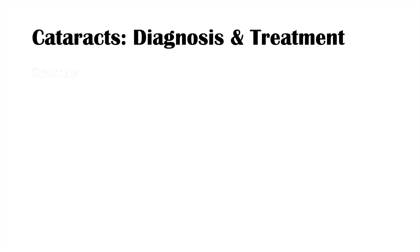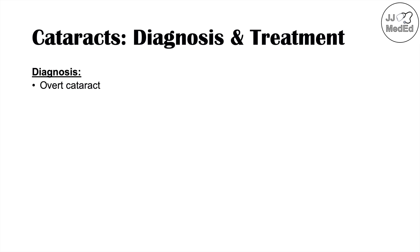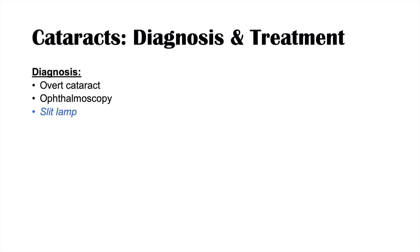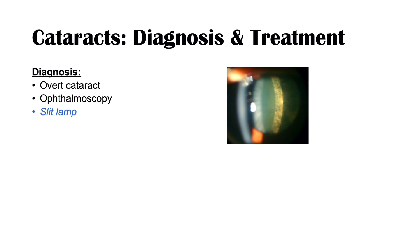Diagnosis of cataracts can involve overt observation if the cataract is visible, or ophthalmoscopy, though that is not usually the best method. The best way is through a slit lamp, where you can look straight on or at an angle to visualize the different layers — a cortical cataract may show radial spokes, while a posterior subcapsular cataract shows that characteristic grainy-looking appearance.